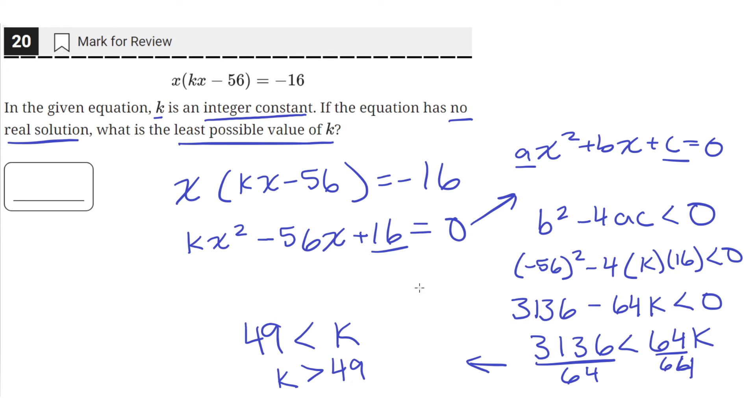We can just flip this to say that k is greater than 49. So that means we need k to be greater than 49 in order for the discriminant to be negative, because when the discriminant is negative, that means we have no solution. Now the question asks us for an integer, which means a whole number, and it has to be the least possible. So the smallest value we can be while also being an integer greater than 49 is 50. So the smallest integer possible for the value of k is 50.